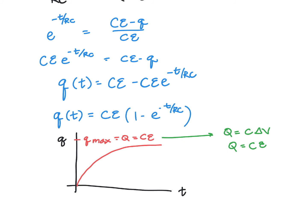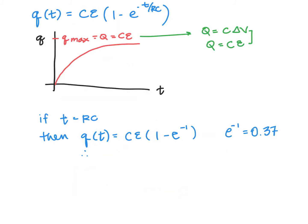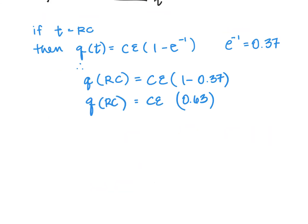So now let's say if T is equal to RC, then we can make a substitution here, and we'll have C times epsilon times 1 minus e to the negative 1, which is 0.37. And 1 minus 0.37 is about 0.63. So the charge on the capacitor at a time RC is equal to Q times 0.63.